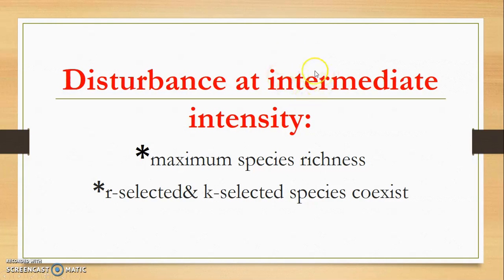That will be occurred at intermediate intensity. Here R selected and K selected species both species can co-exist.